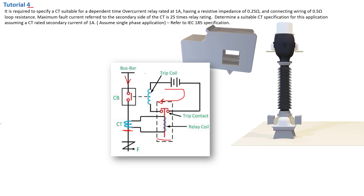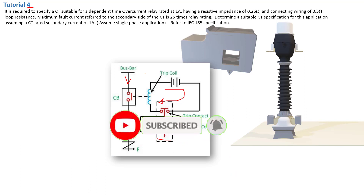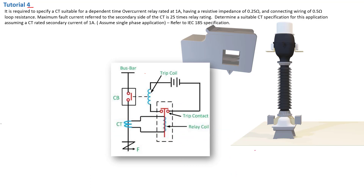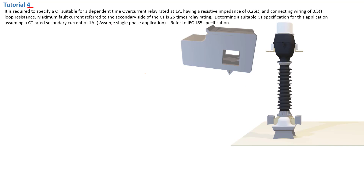So that is the CT, the current transformer, that we need to choose so that it can operate in these discrimination configurations. Moving forward, they say assume a single phase application and refer to IEC 185 specification. That circuit is a single phase application — if it's a three-phase application, every phase will be dealt with individually.